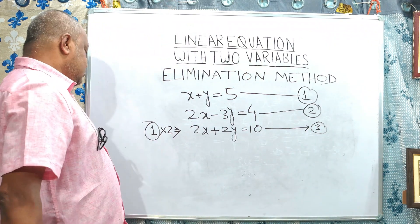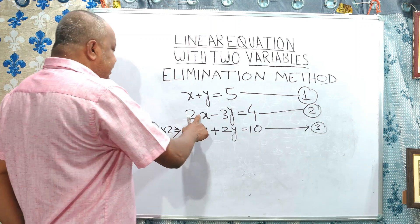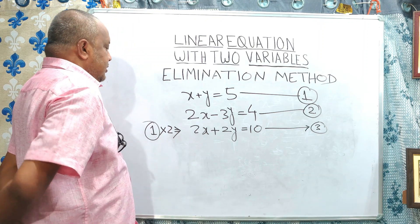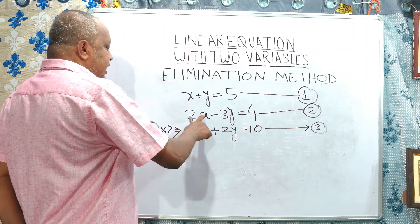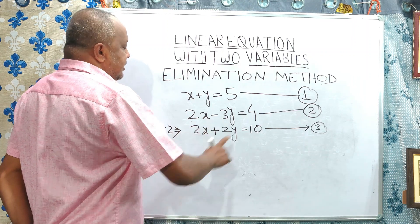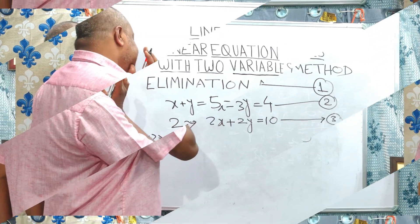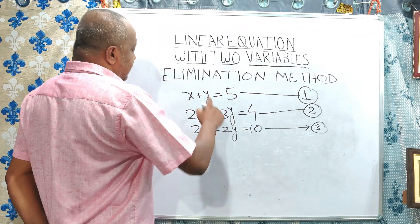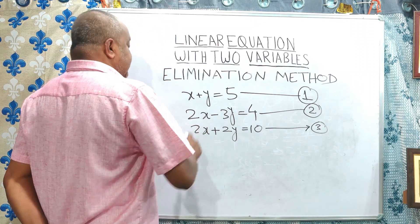The purpose of multiplying by 2 is that the coefficient of x remains the same for both equations. Now, 2x minus 2y and 2x plus 2y — these two coefficients of x are both equal to 2. We can make the coefficients the same; in this case, we are making the coefficient of x the same.